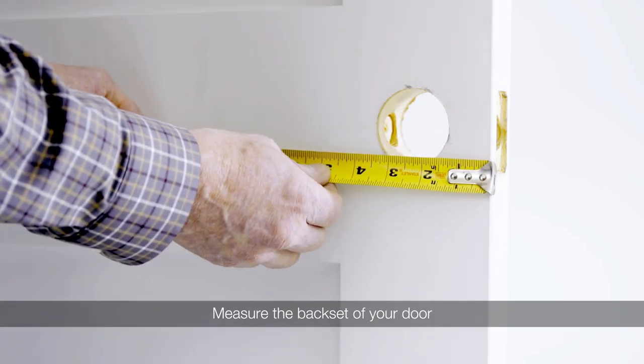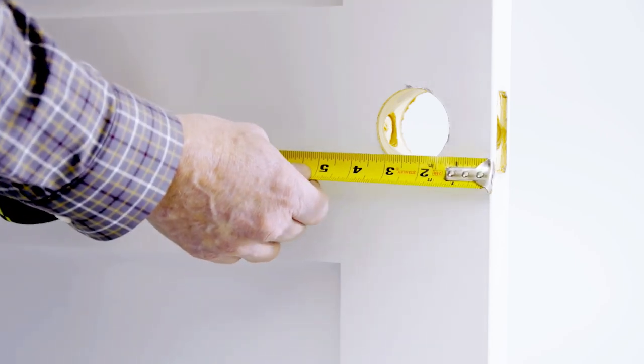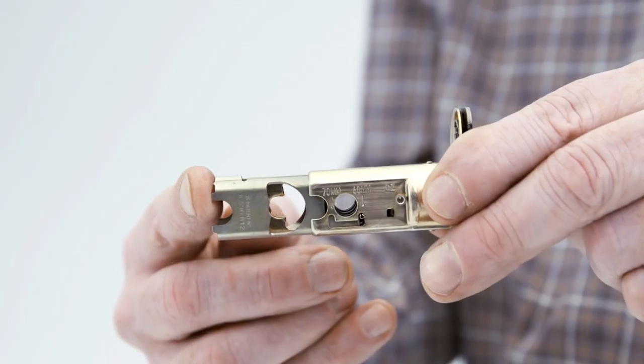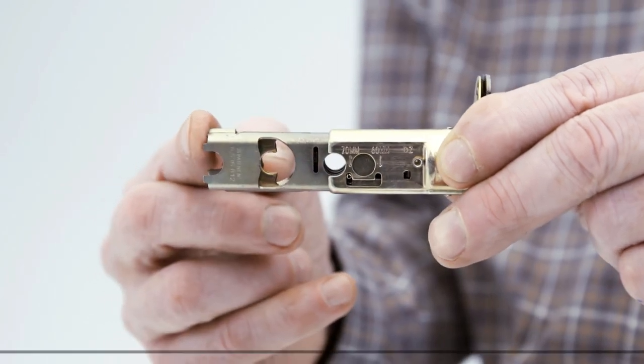Measure the back set of your door. If the back set of your door measures two and three-fourths inches, adjust the latch by grasping the spring pin and moving it to the two and three-fourths inch slot.